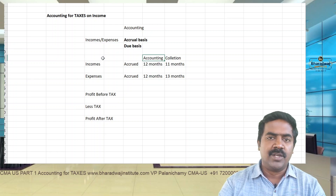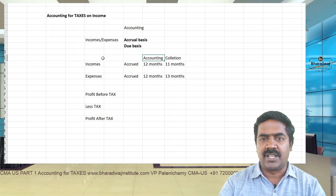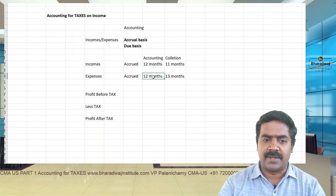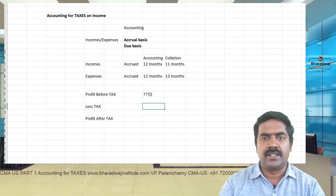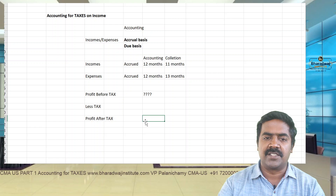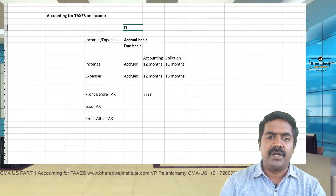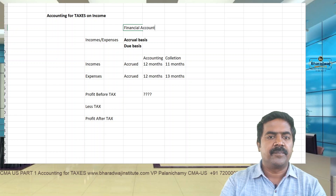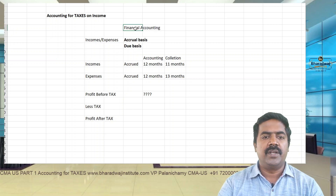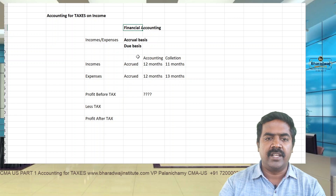We record 12 months income belonging to the current year and 12 months expenses, then work out profit before tax. We apply the tax rate - it may be 30 or 40 percent depending on the laws applicable - and calculate profit after tax. This is what we do in financial accounting. Incomes and expenses are recognized on accrual basis.